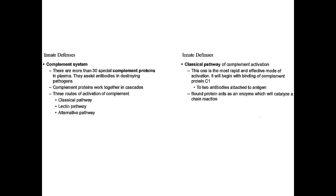The complement system includes more than 30 special complement proteins in the plasma. These proteins help antibodies destroy pathogens by working together in cascades. There are three main routes of activation: the classical, the lectin, and the alternative pathway.